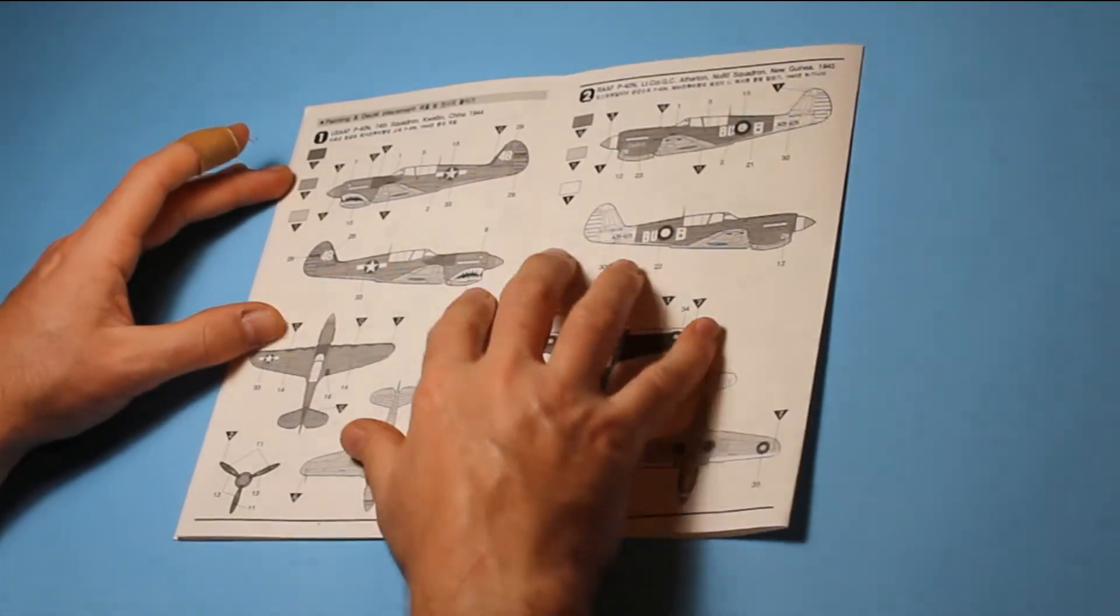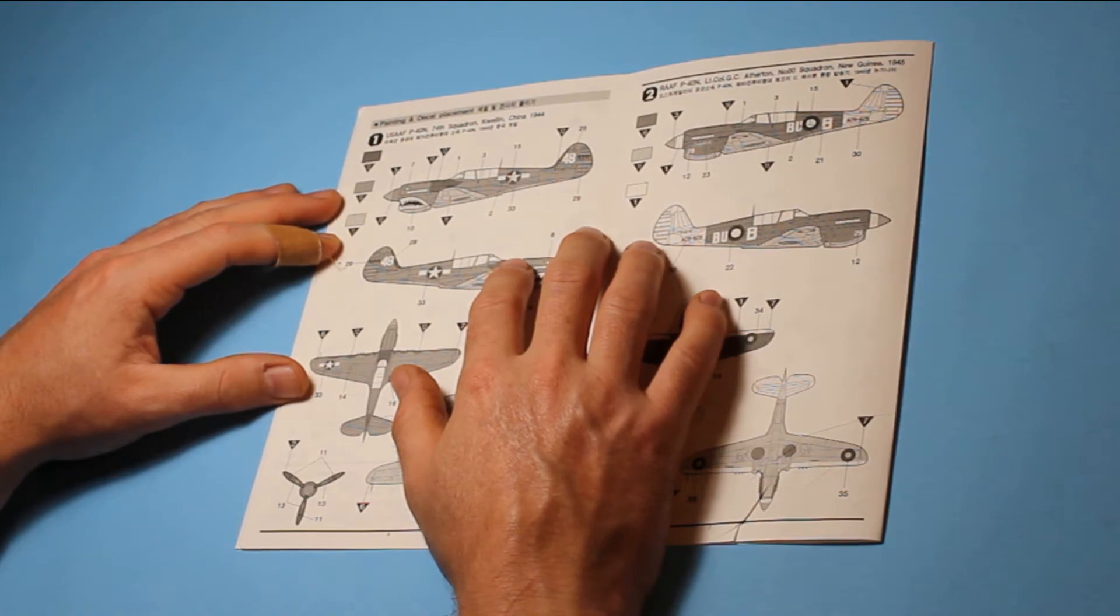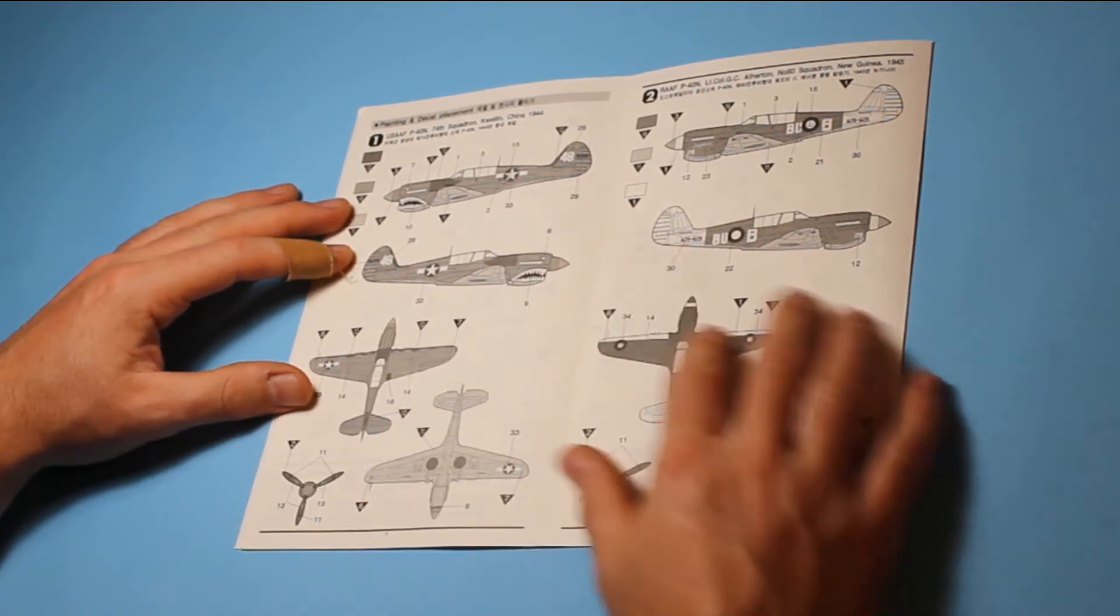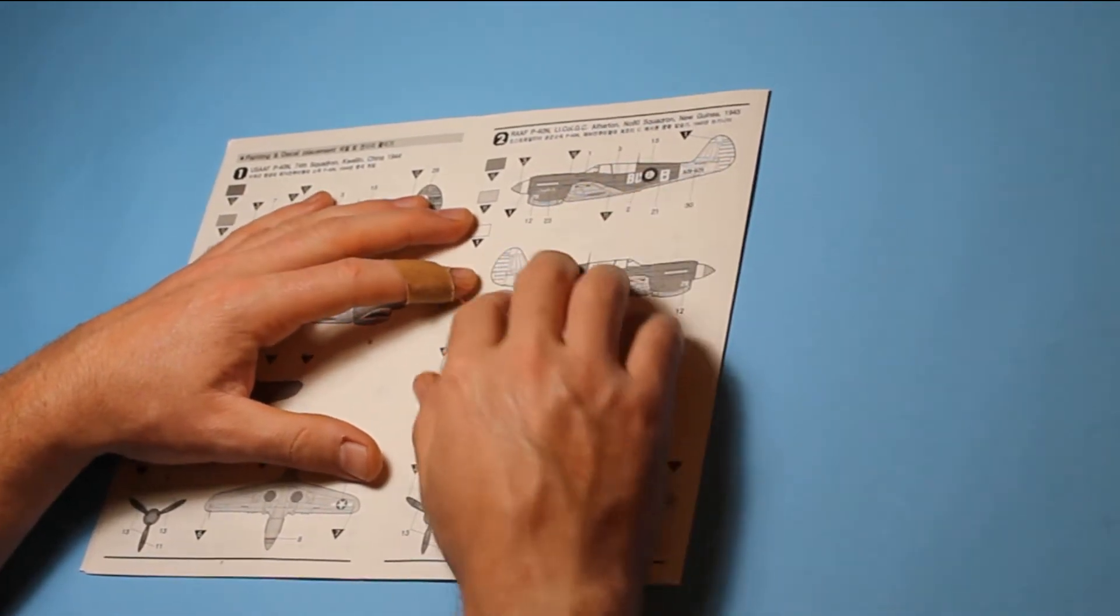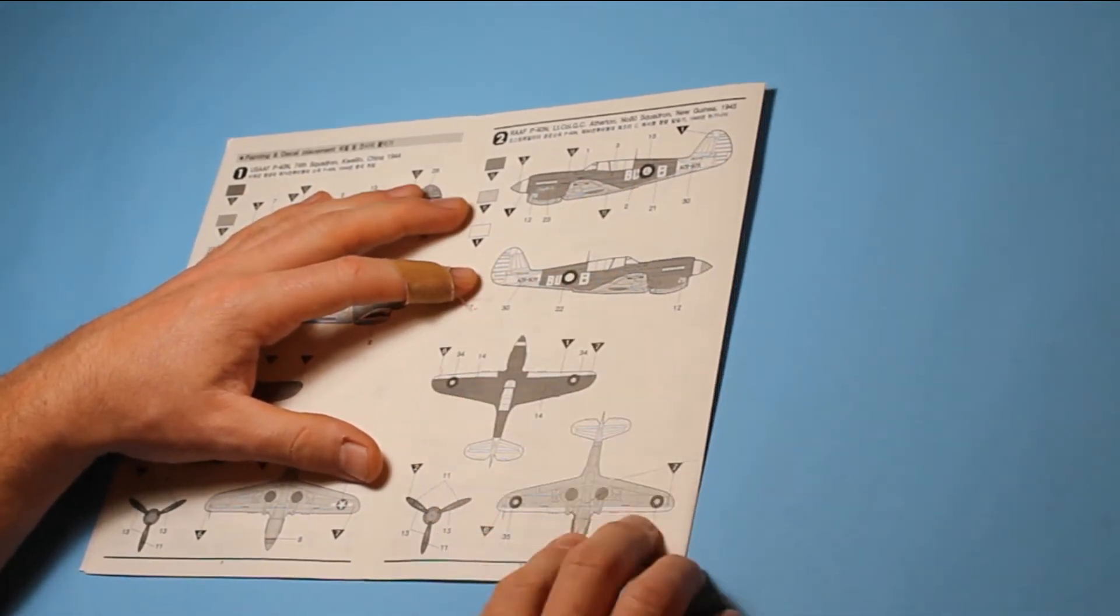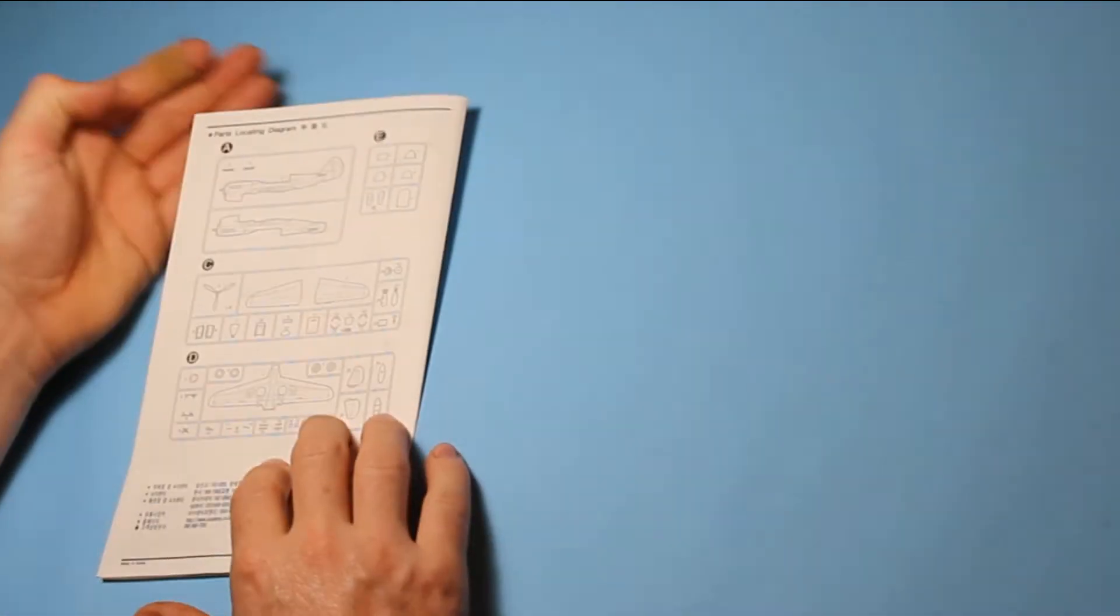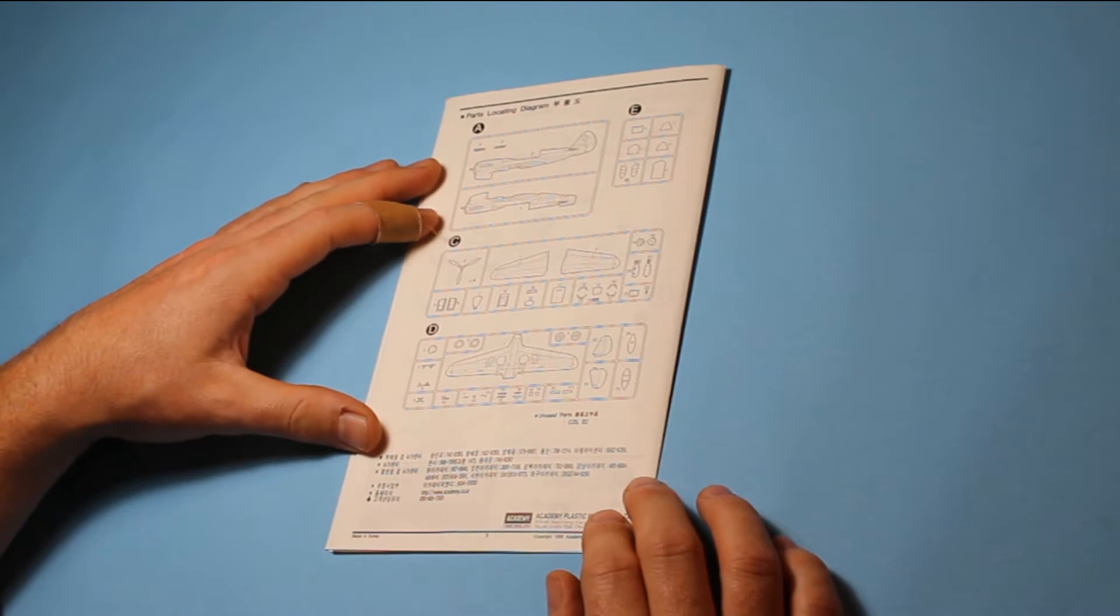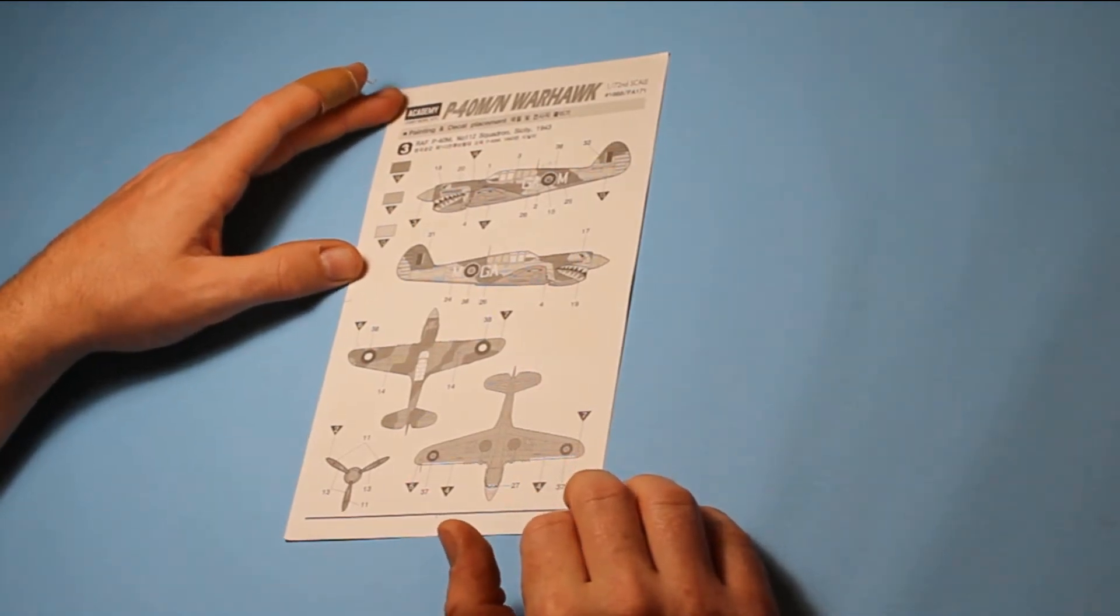Then we've got marking options. The first one is for the N variant which is the US Air Force in China, 1944. And then we've got, again, this is the Royal Australian Air Force in New Guinea, 1945. And then we've got the sprue breakdown there as well. There is another option as well for the RAF M version, which is Sicily 1943.